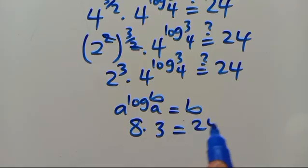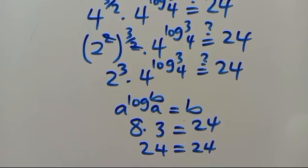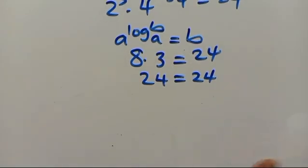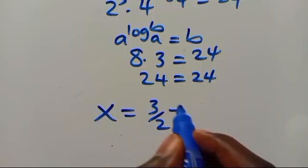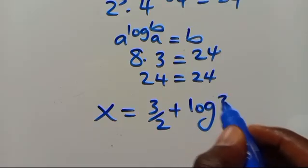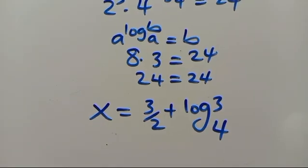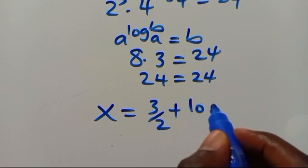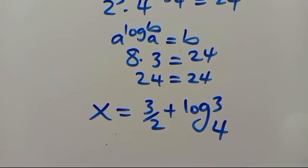So we get 2 cubed times 3 equals 8 times 3 equals 24, confirming 24 equals 24. This implies that x equals 3 over 2 plus log base 4 of 3 satisfies the problem given to us.